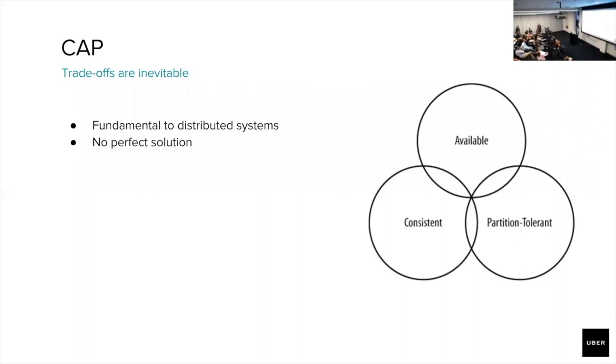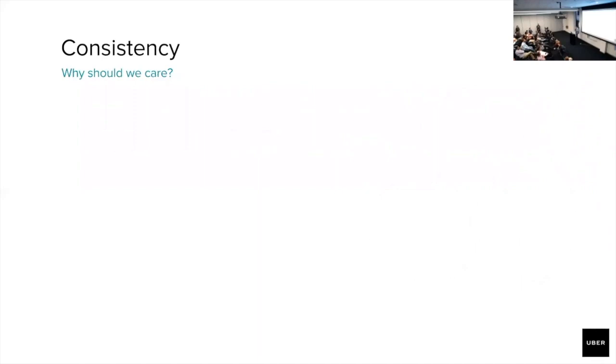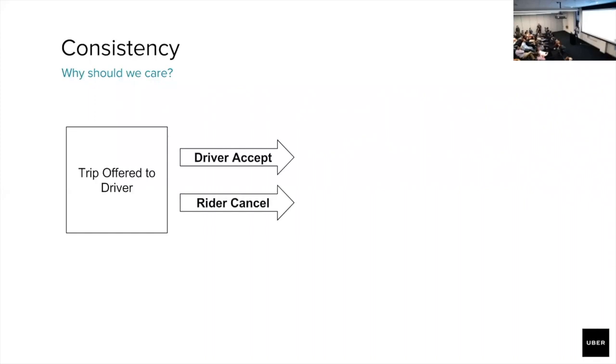Now, I'm going to give a real-world example that will give us insight into why consistency is important in our systems. Imagine we have a trip that just got offered to a driver. At the same time, the driver accepts the trip, and the rider attempts to cancel this trip.